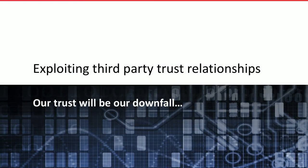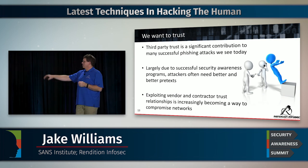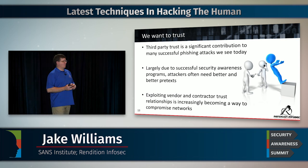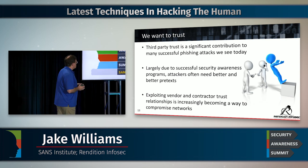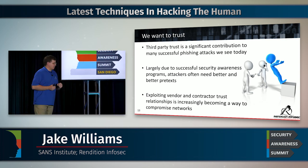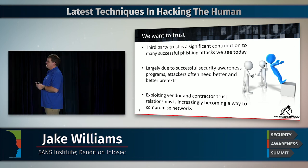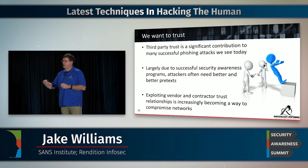I want to talk about exploiting third-party trust relationships, because we are trusting by nature. Largely due to successful security awareness programs from folks like you, we are having to get craftier and craftier with our pretext and backstop it with better cover as attackers. Exploiting vendor and contractor trust relationships is becoming a great way to compromise networks. You won't see a lot of red teamers doing this, because a lot of penetration tests don't cover it due to brand recognition or brand reputation issues.